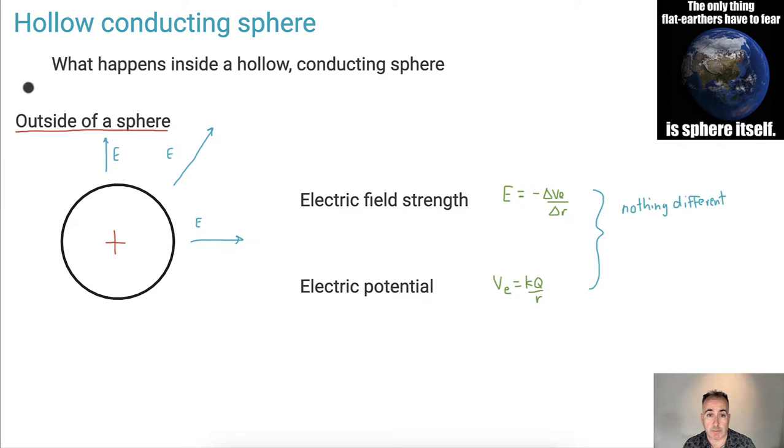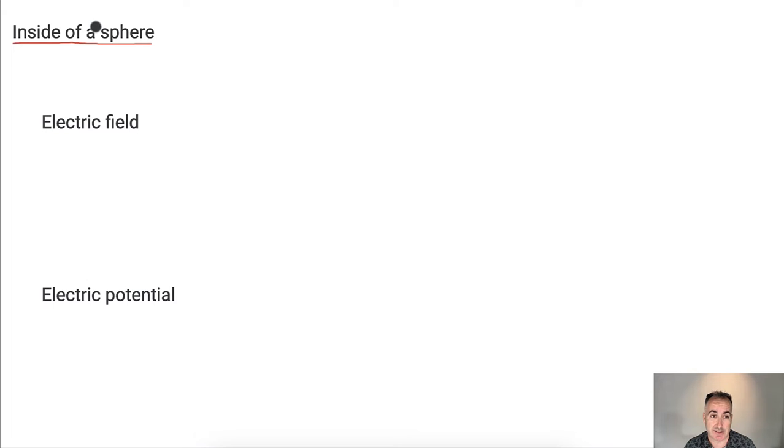So what does that mean? If we had a graph of electric field strength against R here, keep in mind if we took the absolute value to keep it positive, and compare that to a graph of the potential versus R, both of them at least outside the sphere would be nice and simple. They both just go down like this. No problem because they're both 1 over R's.